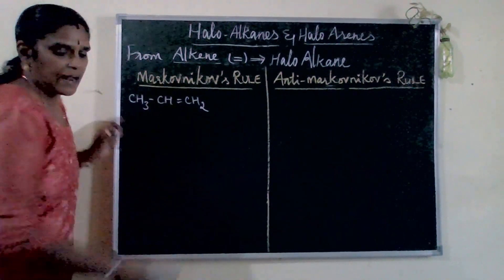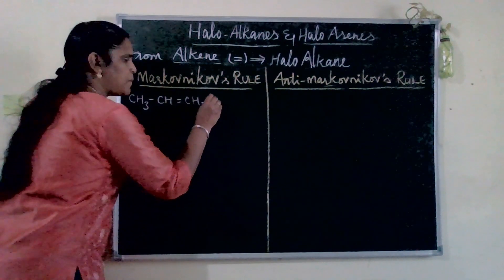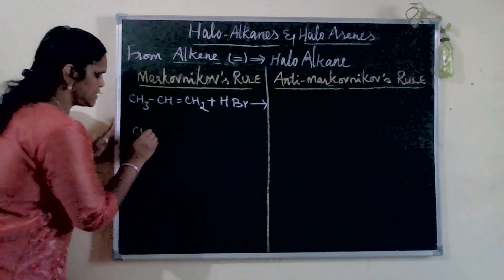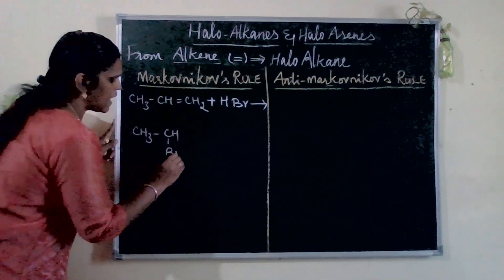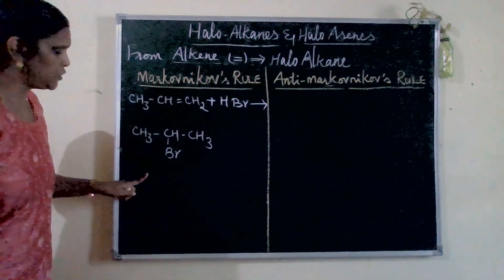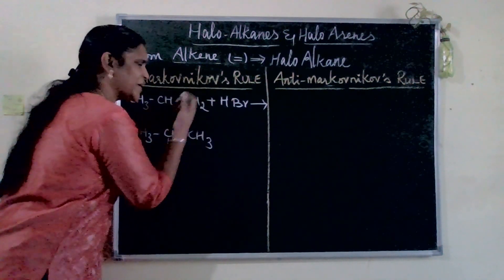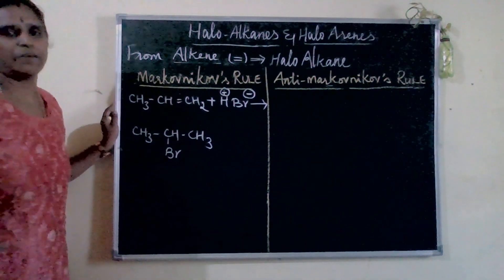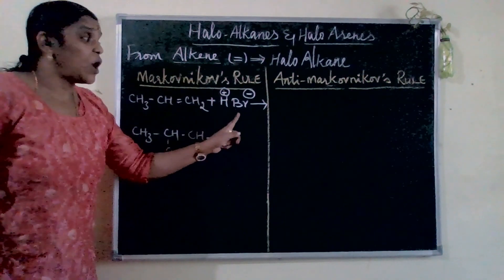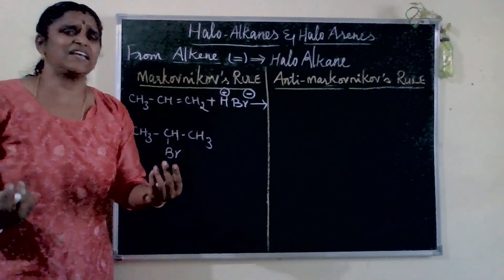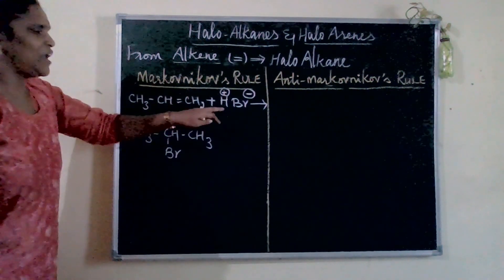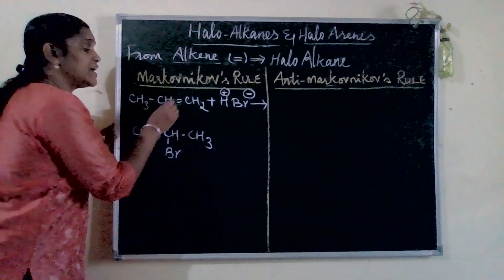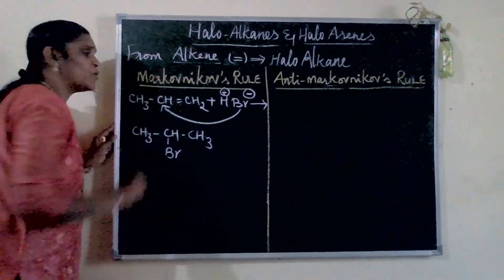We are talking about unsymmetrical alkene only. When unsymmetrical alkene combines with hydrogen halide — here we take hydrogen bromide — the product you get is CH3-CHBr-CH3. Now how does this rearrangement happen? H+ ion and Br- ion: the bromide ion will go and attach wherever there is a lesser number of hydrogens.